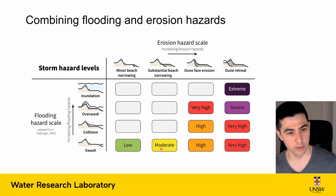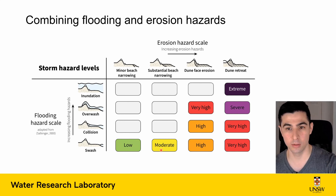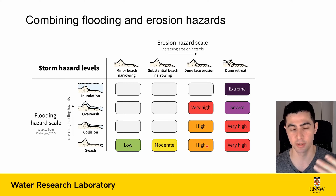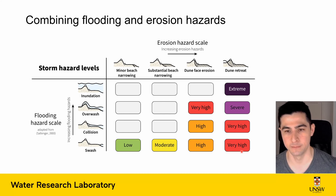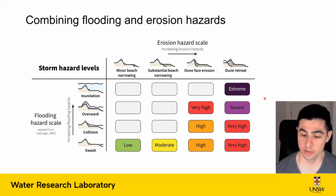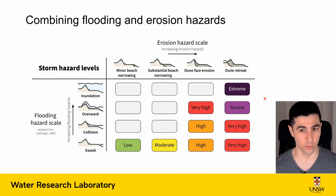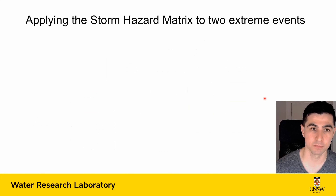The grayed-out cells in the matrix represent combinations that wouldn't normally be likely on sandy beaches. The other boxes indicate the overall severity of the combination of flooding and erosion hazards. For example, in the swash regime we might have minor or substantial beach narrowing where the water level doesn't rise above the dune toe, but if we get a long enough storm or increased wave energy, we can start to undermine the dune, leading to dune face erosion or dune retreat.